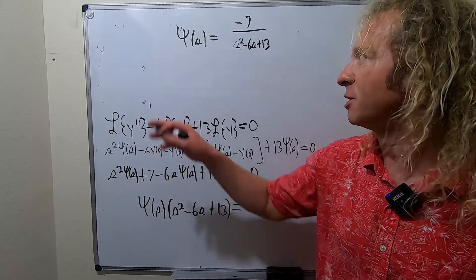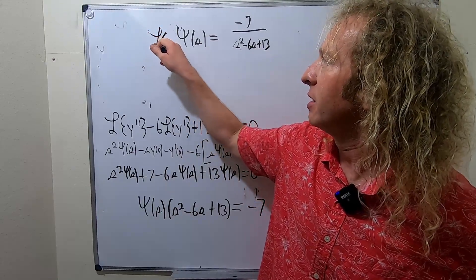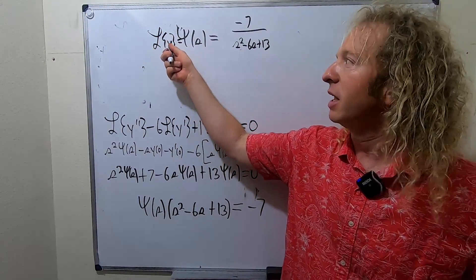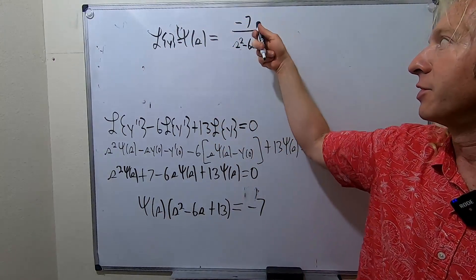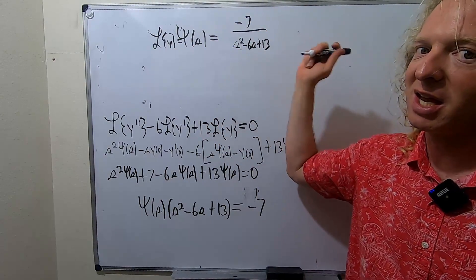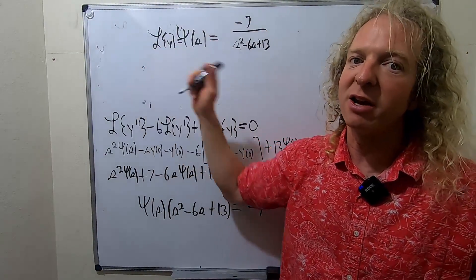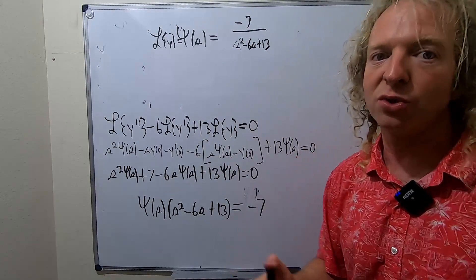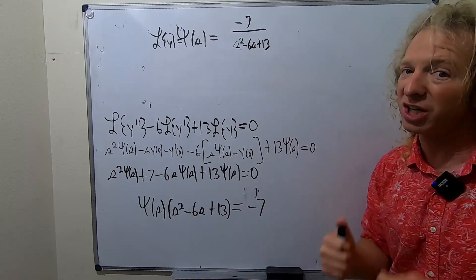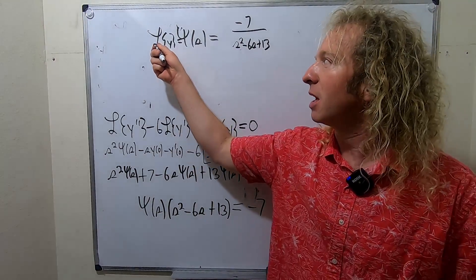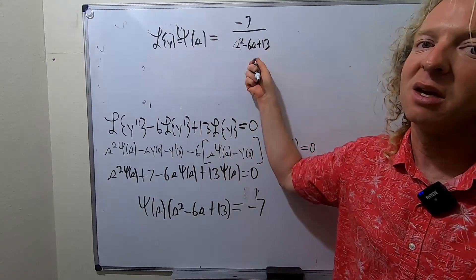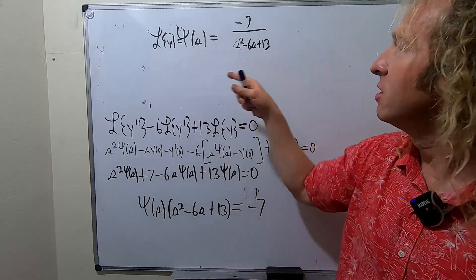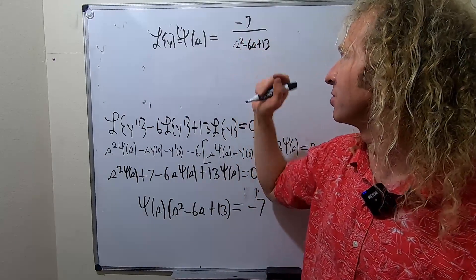Why did we do that? Well, pitchfork y is something special. Pitchfork y is the Laplace of little y. So the Laplace of little y takes y and sends it to this function. So the inverse Laplace takes this function and sends it back to y. In other words, if we find the inverse Laplace of this, we're going to end up with the solution to the differential equation, which is y.